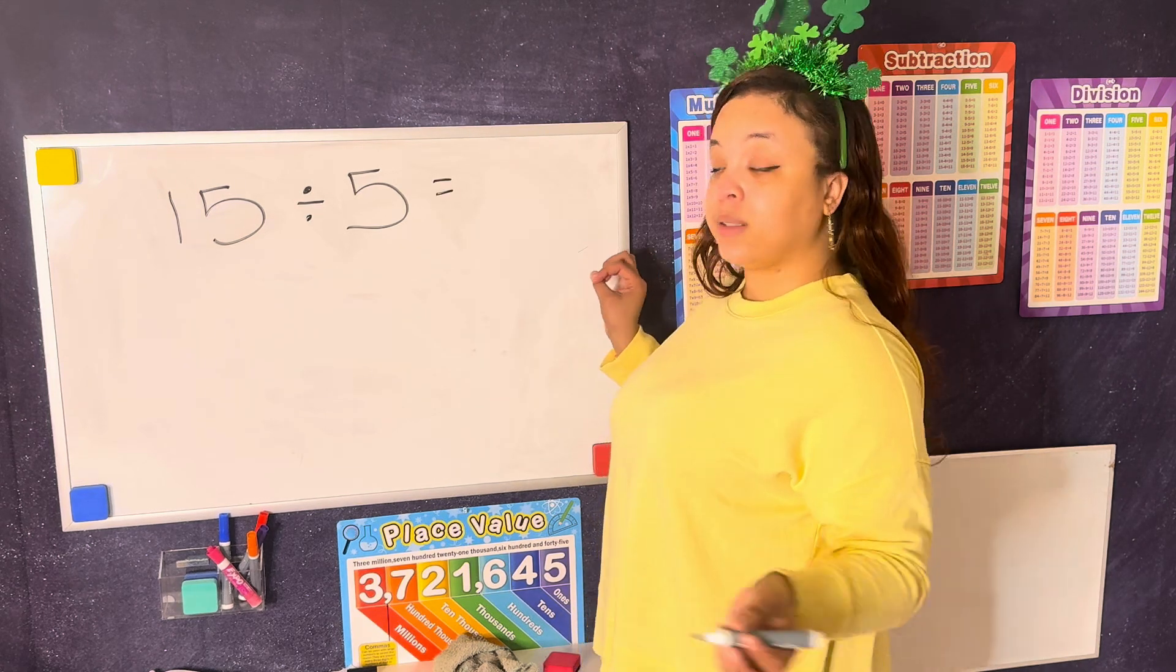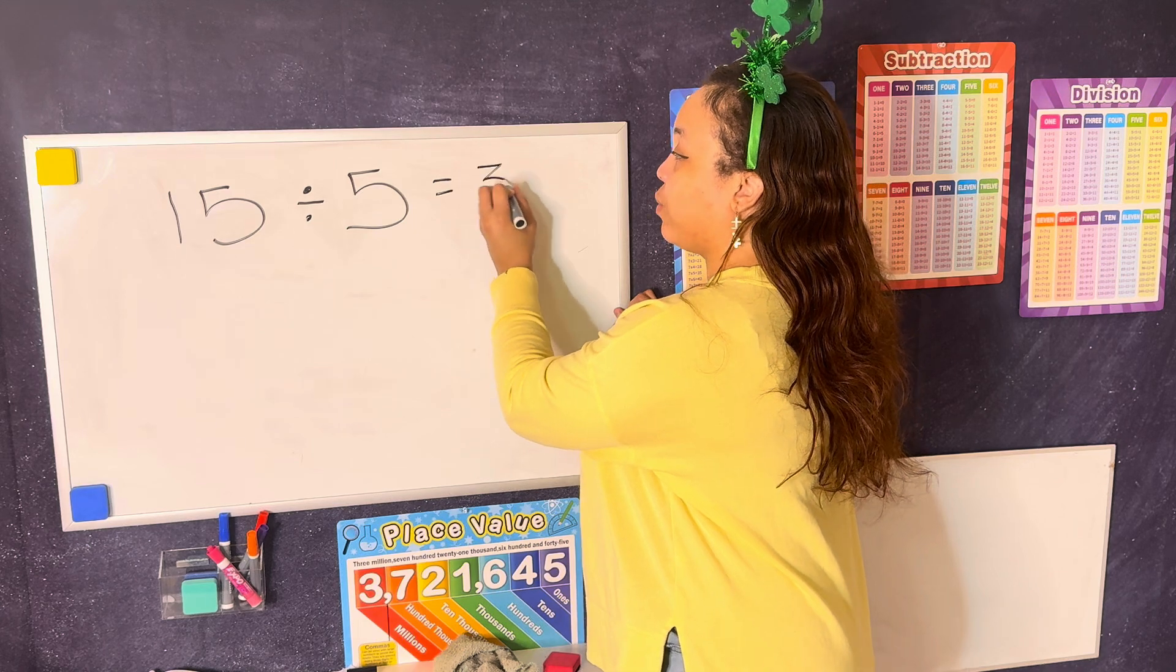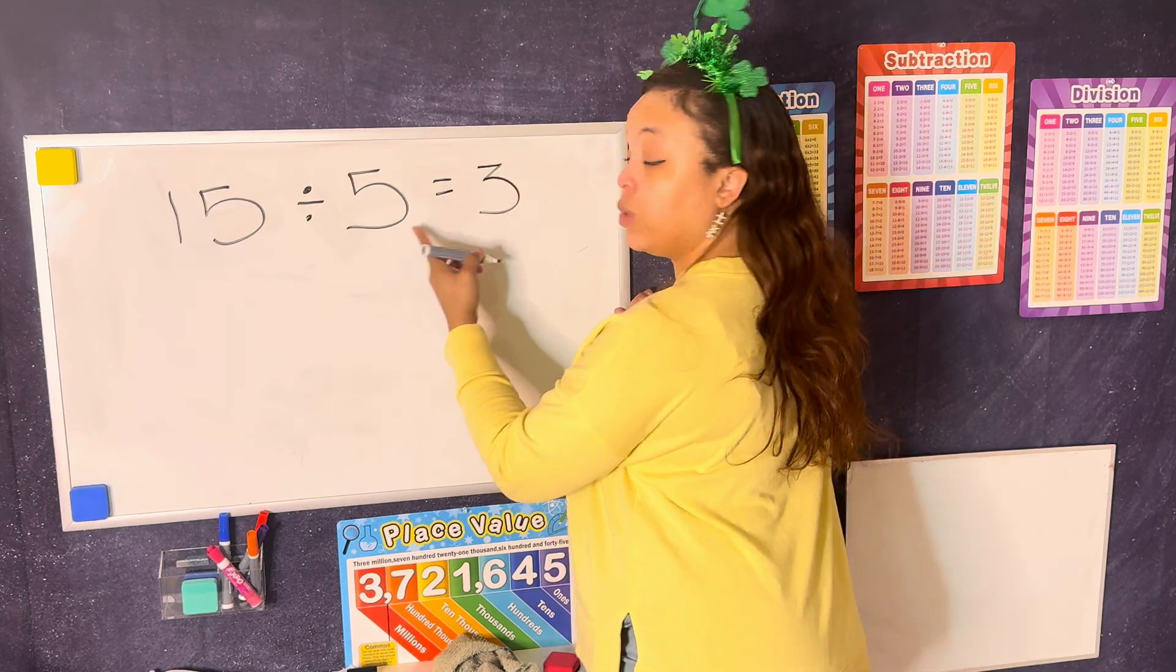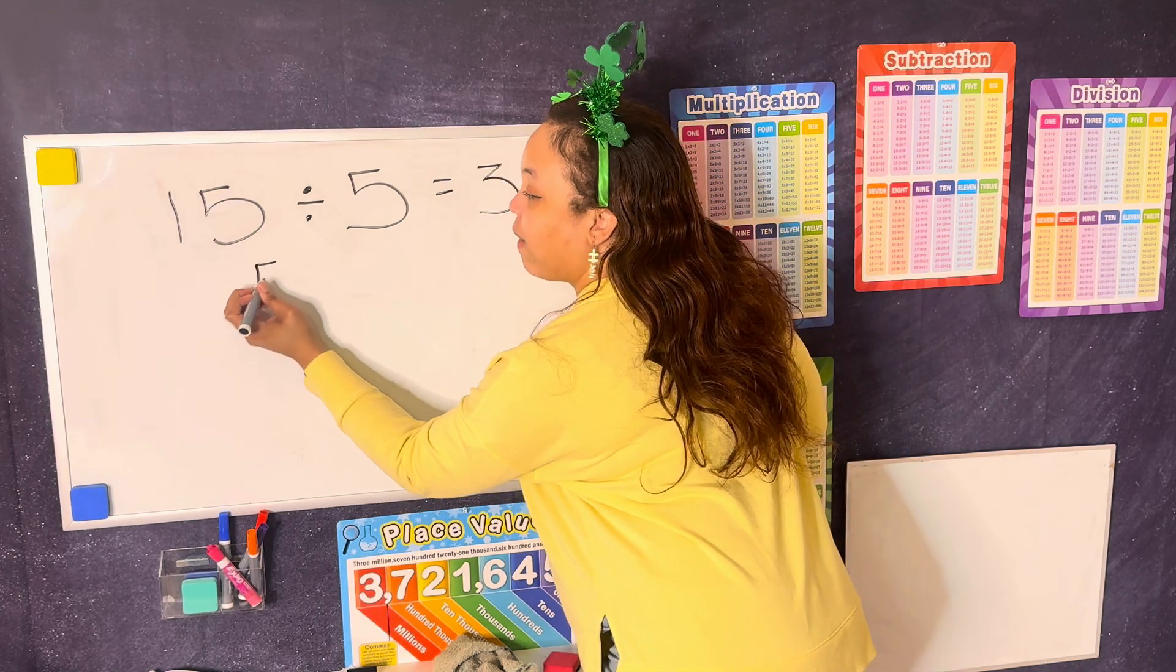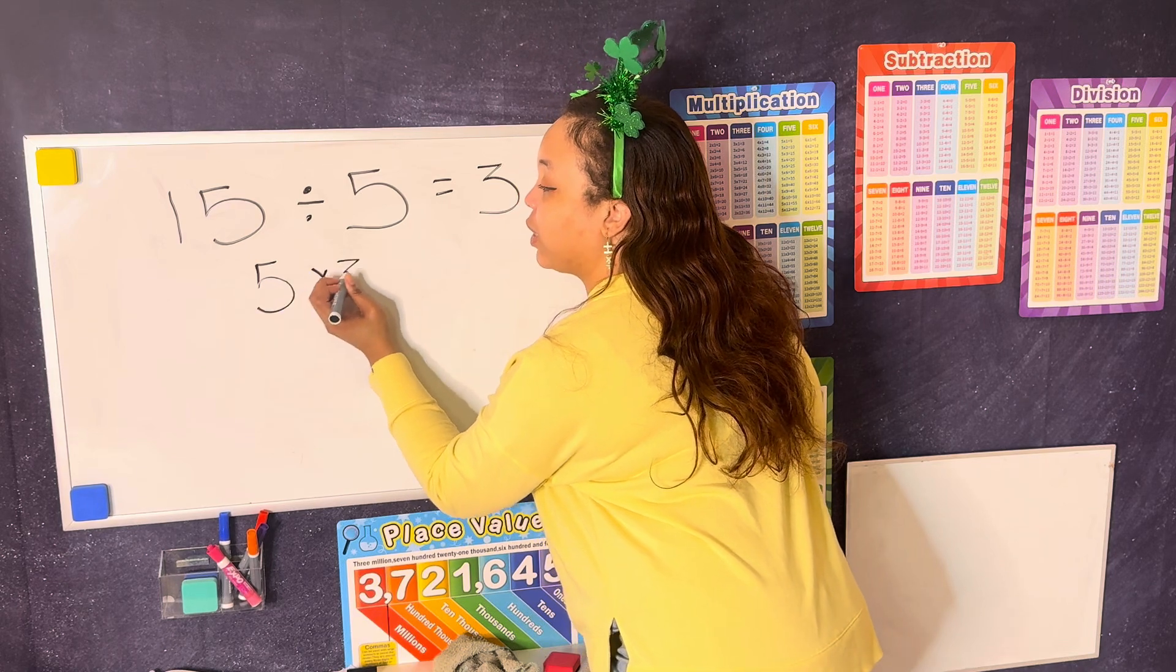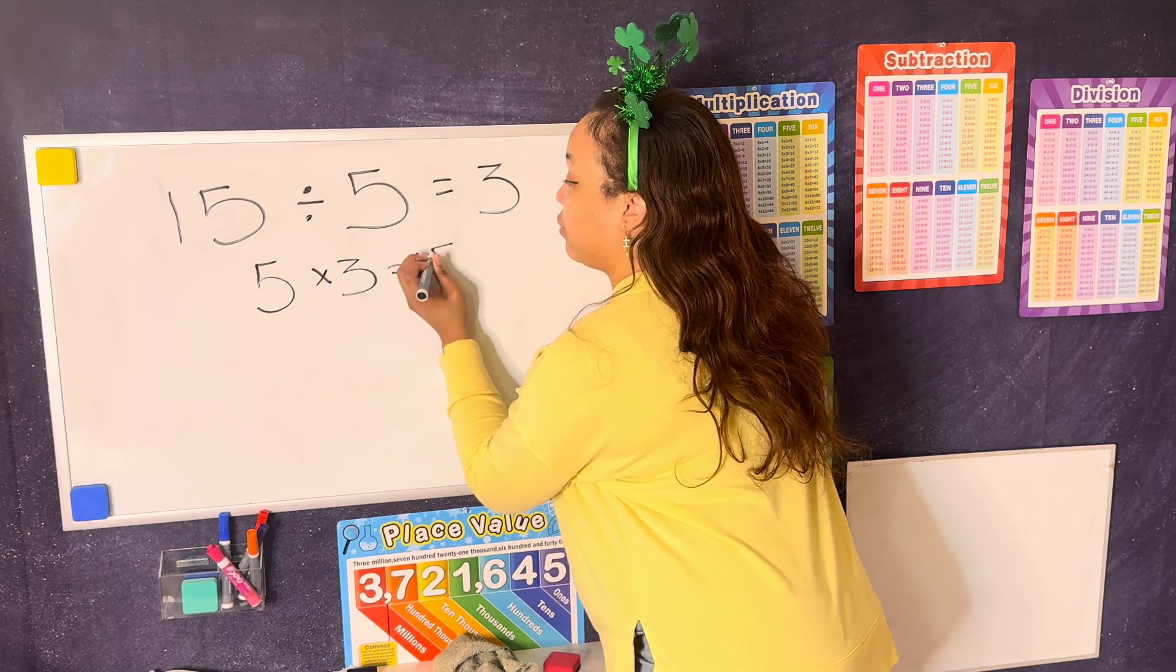Yes. 3 groups of 5 will give you 15. Because when you check it, 5 times 3 equals 15.